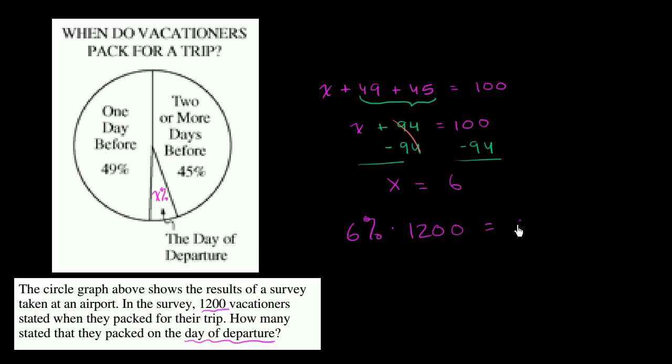And that's the same thing as 0.06 times 1,200, which is going to be equal to, let's see, 6 times 12 is 72. 6 times 1,200 is going to be 7,200, but this is 0.06. So we have two digits to the right of the decimal. So we're going to need two digits to the right of the decimal here, one, two. So we have exactly 72 people stated that they packed on the day of departure.